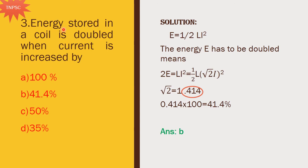Next question: energy stored in a coil is doubled when current is increased by how much? The energy formula is E = 1/2 L I squared. If we double the energy, 2E = L I squared. This can be written as 1/2 L (root 2 × I) squared, since (root 2 I)^2 = 2 I^2. So instead of I we have root 2 I. Root 2 equals 1.414, so the current increases by 0.414, which is 41.4%. Option B is the right answer.